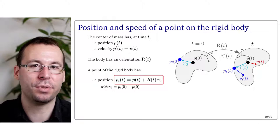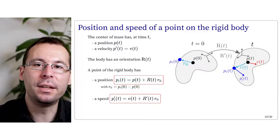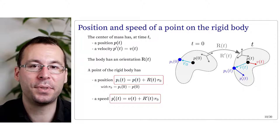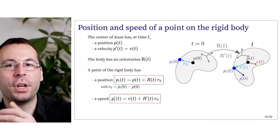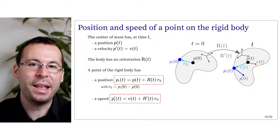If we differentiate this relation, it leads to the velocity correspondence. So Pi'(t) equals the velocity of the center of mass V(t) plus R'(t) times R0. This introduces the notion of the derivative of a rotation matrix, which is related to the notion of angular velocity. The angular velocity omega is a 3D vector that gives the instantaneous magnitude and angle of rotation of any point of the solid around its center of mass.